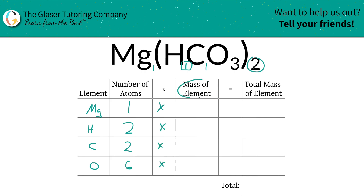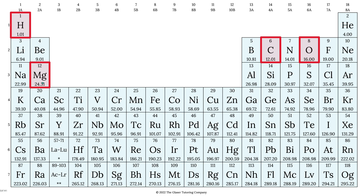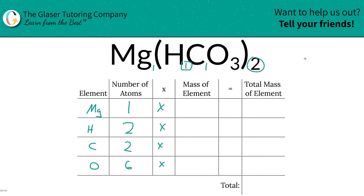So then we're going to multiply all those number of atoms by the mass of each individual element, and the periodic table helps us out with this. So we got 24.31 units of mass for magnesium, hydrogen is 1.01, carbon is 12.01, and oxygen is 16. So we're going to write them in the table: magnesium 24.31, hydrogen 1.01, carbon 12.01, and oxygen 16.